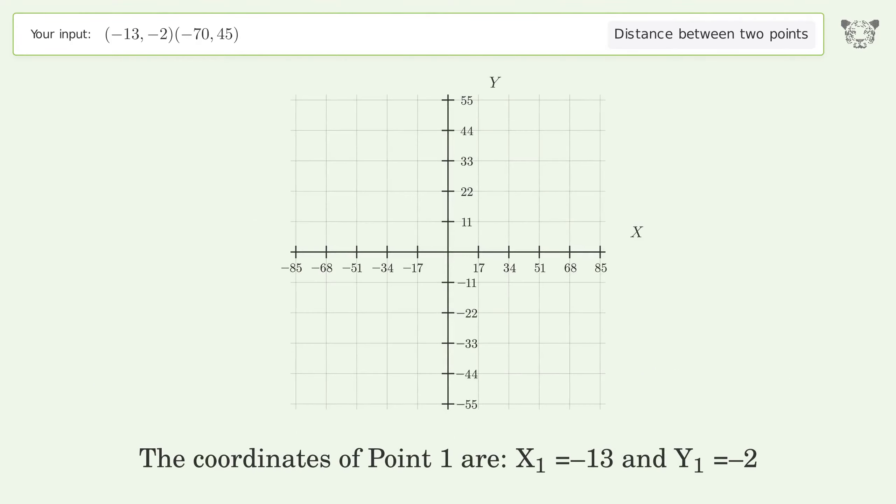The coordinates of Point 1 are x1 equals negative 13 and y1 equals negative 2. The coordinates of Point 2 are x2 equals negative 70 and y2 equals 45.